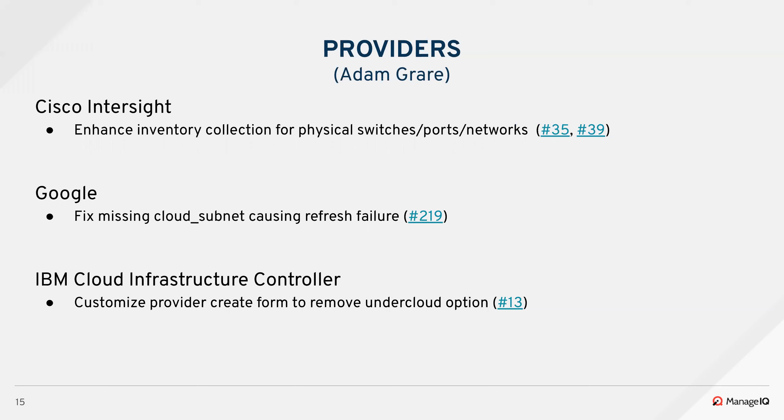For Cisco Intersight, they enhanced inventory collection to have better display of physical switches, ports and networks, and associated relationships to physical servers — a nice enhancement to improve the amount of information displayed about physical inventory. For Google, we fixed an issue where shared cloud subnets weren't being collected with certain credentials, causing refresh failures. We handle it now by skipping nil values, and will look at collecting shared networks and subnets not returned by the normal API. For IBM CIC, they customized the provider create form since there's no option for an under-cloud, overriding OpenStack params to remove that option and show only what's available.